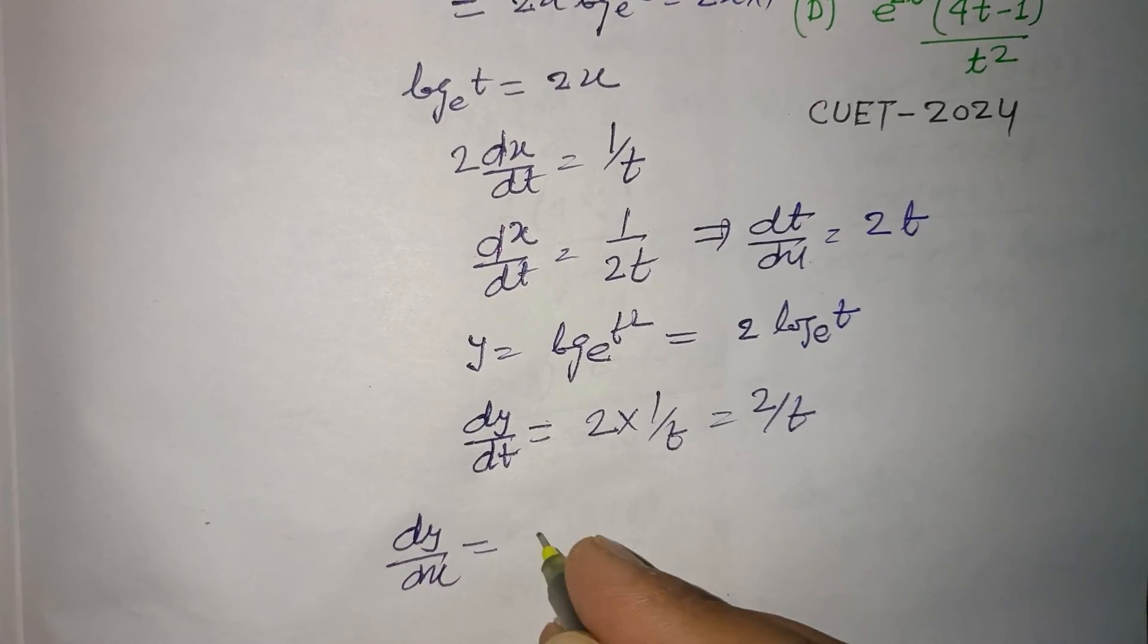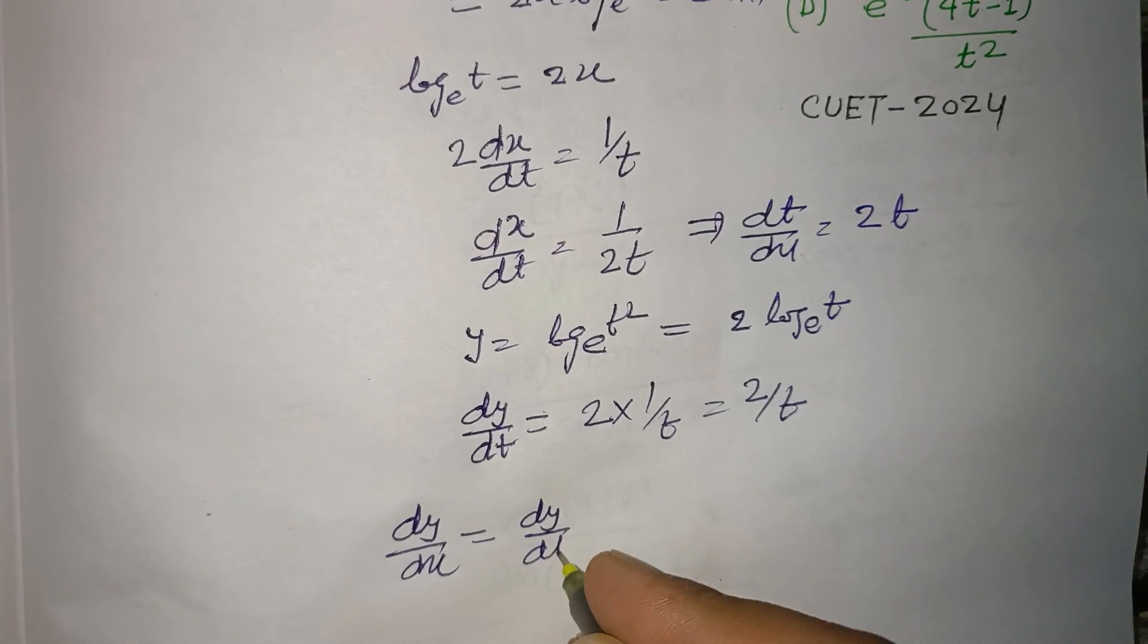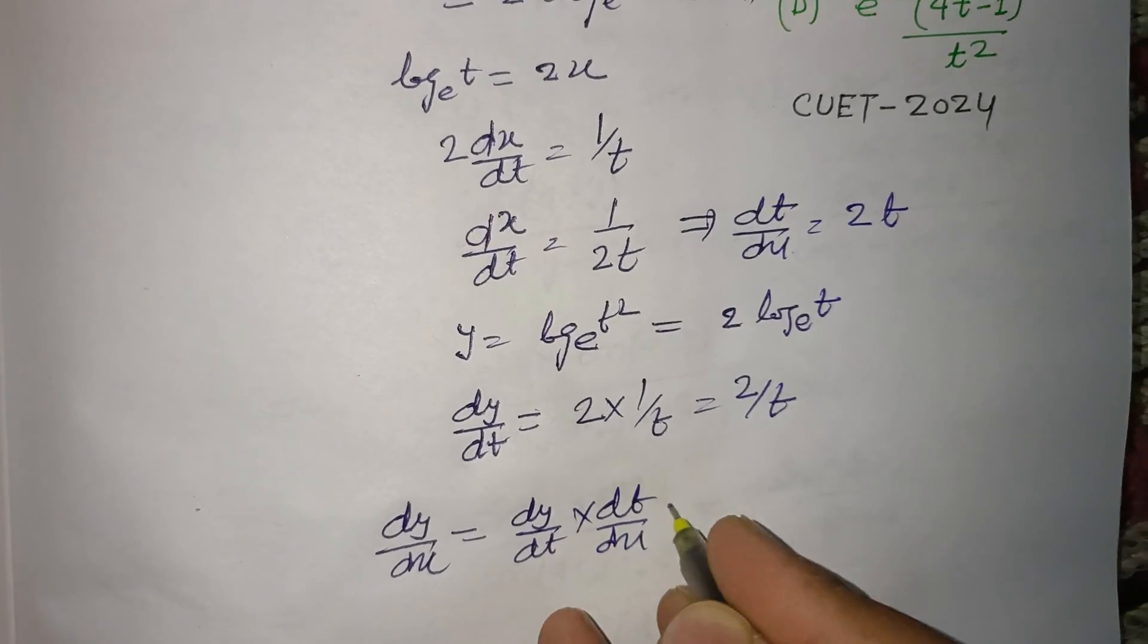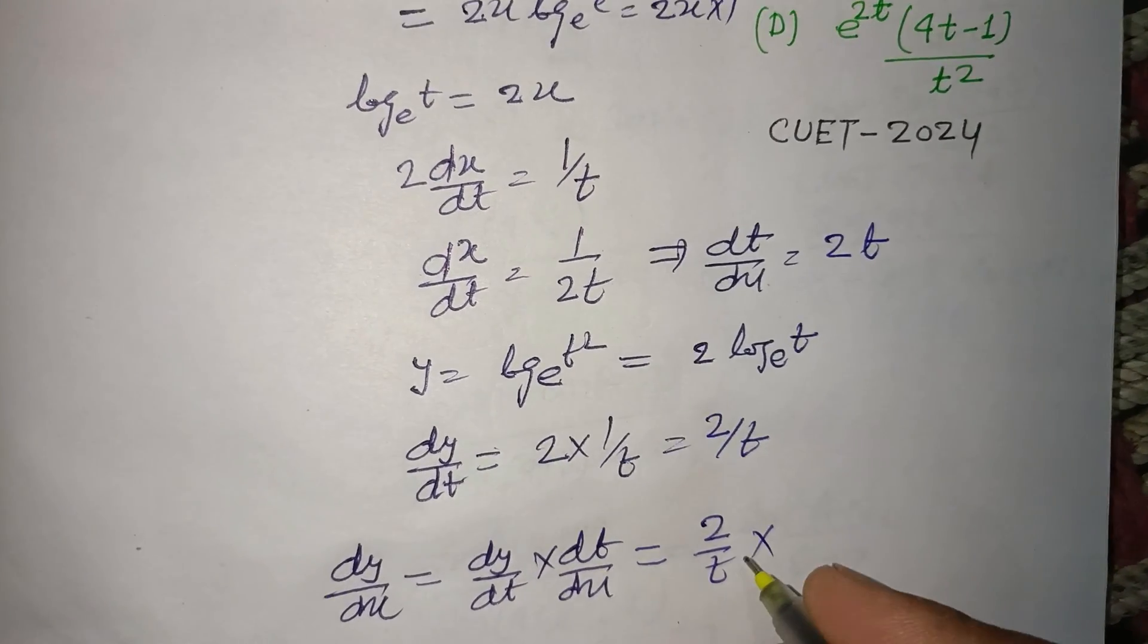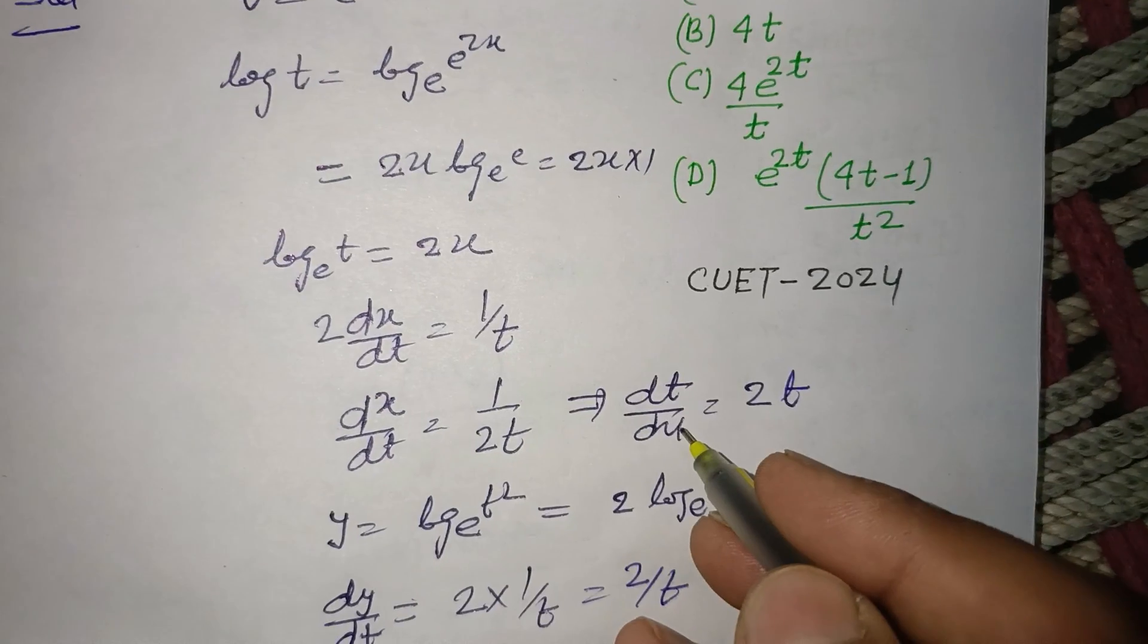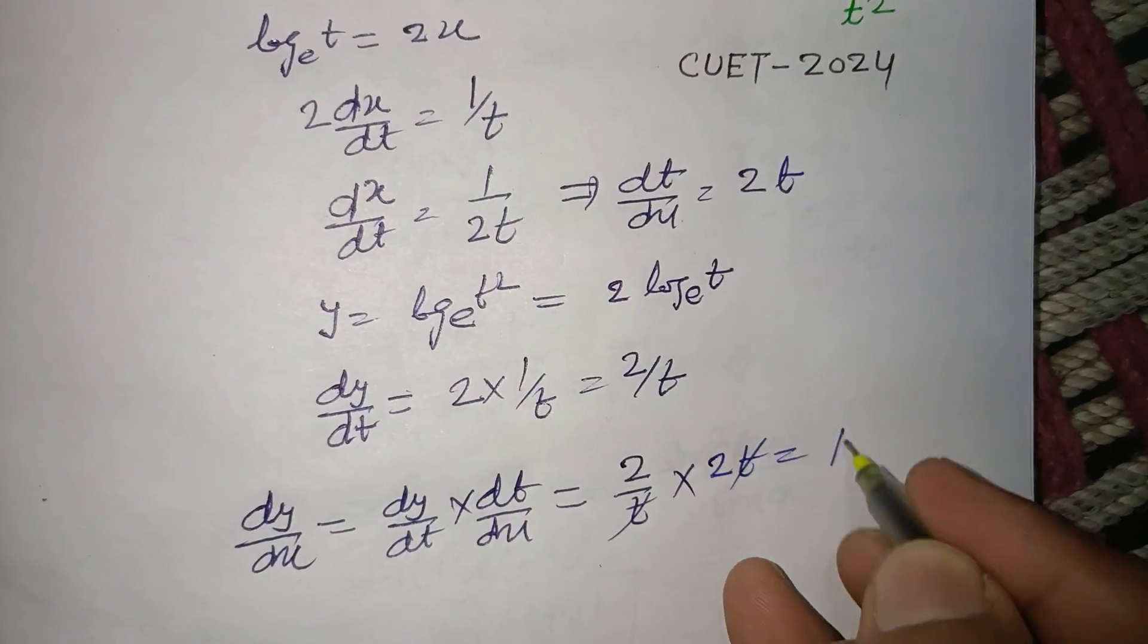by dx equals dy by dt times dt over dx. So dy by dt is 2 over t and dt is 2t. These cancel and we got 4. So dy by